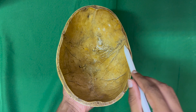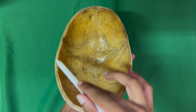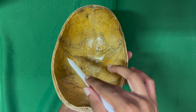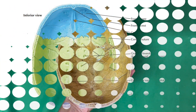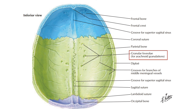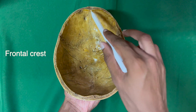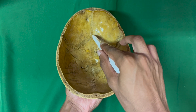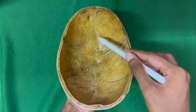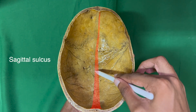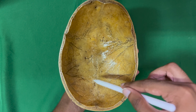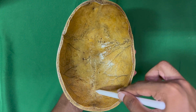The inner table of the skull vault is thin and brittle. It presents markings produced by the meningeal vessels, venous sinuses, arachnoid granulations, and to some extent by the cerebral gyri. It also presents raised ridges formed by the attachments of the dural folds. The frontal crest lies anteriorly in the median plane and projects backwards. The sagittal sulcus runs from anterior to posterior in the median plane, becomes progressively wider posteriorly, and lodges the superior sagittal sinus.